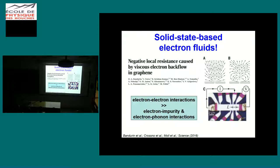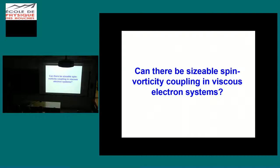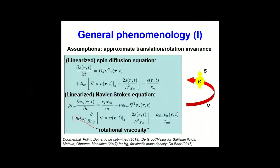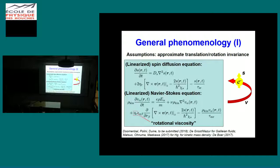The spin-vorticity coupling I'm going to talk about is the coupling between the spin of the electron and the flow of electrons in these setups — not in actual liquids but in systems where electrons behave as a viscous liquid. The questions are: can there be a coupling at all, how large is it, can we do some theory, and can we get predictions? I'll answer these by first going through the phenomenology, then doing a microscopic calculation, giving some estimates, and then one application.